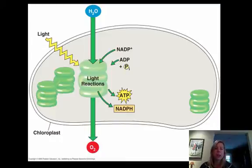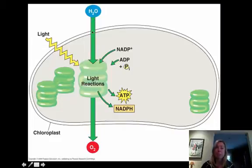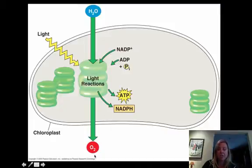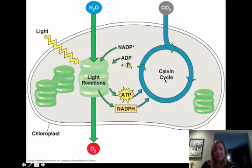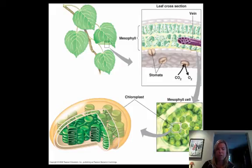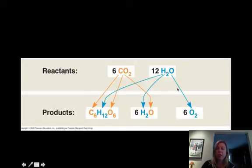Where does the oxygen come from? Hopefully you can pick out that it comes from the water molecule. A lot of people think that carbon dioxide is what gets converted into oxygen, but that's not the case. The carbon dioxide that plants take in is used in the dark reactions, and only to make sugars. So the light reactions make ATP, NADPH, and oxygen; and then the Calvin cycle — the light-independent reactions — takes in carbon dioxide plus that ATP and NADPH to make sugar.